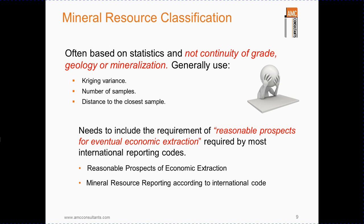Now we must look at the mineral resource classification and how we should apply it. Recently there has been a tendency to use a statistical approach to this task, which does not allow for trends in mineralisation or the geology. This can cause a spotted dog effect that makes no sense geologically and will also affect mine planning. Within a narrow vein environment, statistics may be used as a first pass, but then geological considerations including grade continuity, geology and mineralisation style should have an impact on the final classification.